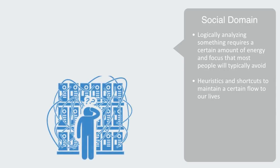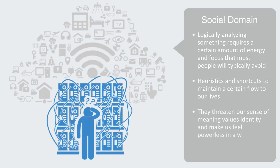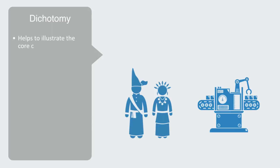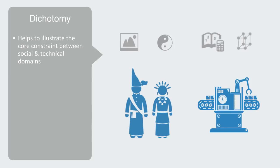Not only do people actively try to avoid the use of logic, they often actually feel threatened by it. From the perspective of most people, faced with these vast systems of logic that support us, they appear empty and mechanical. They threaten our sense of meaning, values, and identity, and make us feel powerless in a world of incomprehensible complexity, where we long for some form of unity and simplicity. This is a somewhat hyperbolic picture of the dichotomy between the social and technical domains, but it helps to illustrate the core constraint. To sum it up, it is the dichotomy between the qualitative and continuous nature of people, and the quantitative, discrete nature of technology. This divide permeates all areas of our systems of organization, from the design of user interfaces and healthcare systems, to people's uneasy feeling about robotics.